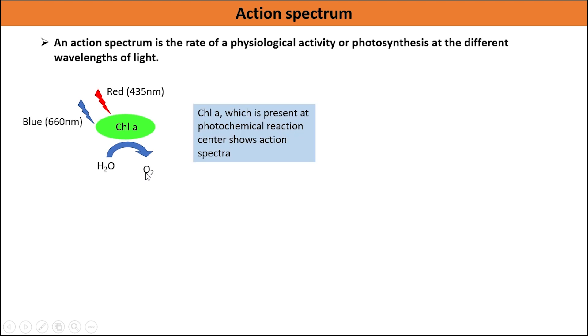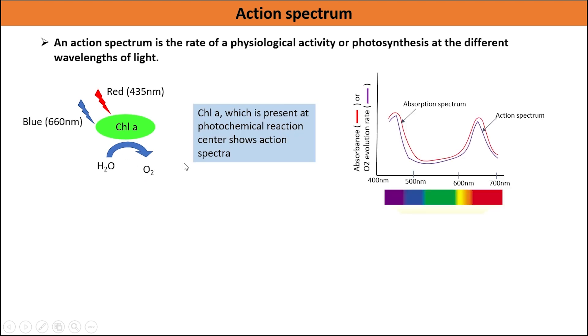So, researchers measure oxygen release at different wavelengths to determine action spectrum. This graph is showing action spectrum. As chlorophyll absorbs blue and red region of light, oxygen release occurs at blue and red region of light.